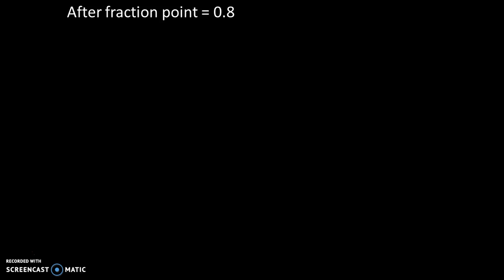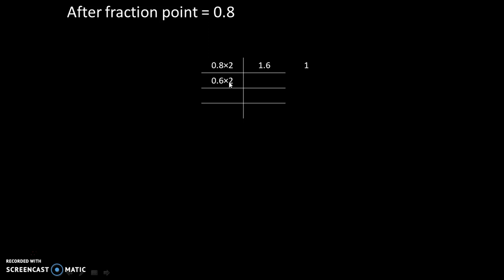We will multiply 0.8 by 2 each time, because the base of the binary number system is 2. So, 0.8 times 2 gives us 1.6. We write the whole part, which is 1, and then multiply the fractional part 0.6 by 2. 0.6 times 2 gives us 1.2 — whole part is 1, fractional part is 0.2. We write 1. Then 0.2 times 2 gives us 0.4 — whole part is 0.